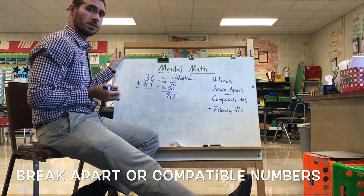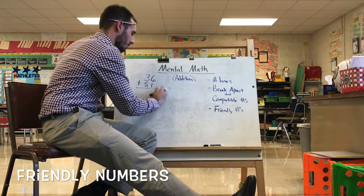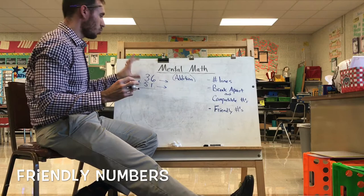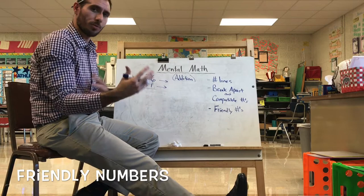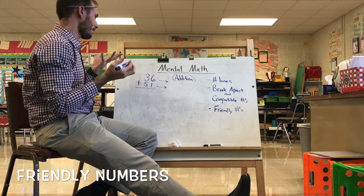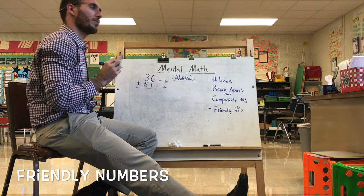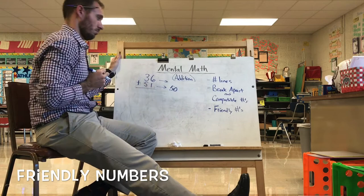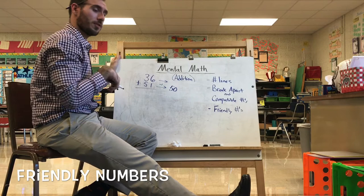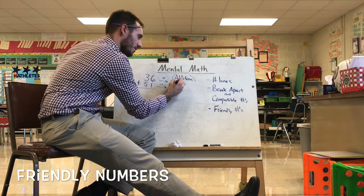Friendly numbers — they're not as friendly if you don't like to use them, as I tell my kids. With friendly numbers, you take one of the numbers and make it as close to an easy multiple as possible — twos, fives, tens; most of the time it's a multiple of 10. So I'll take 51 and get close to a multiple of 10 — the closest is 50. I subtracted 1, so the opposite of subtraction is addition; I need to add 1 to the other number, making 36 become 37. Now the math is much faster: 50 plus 37 is 87.